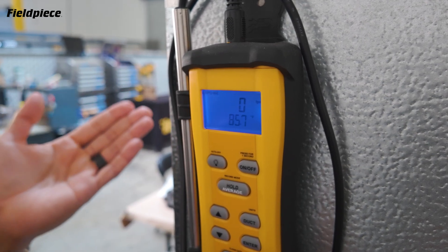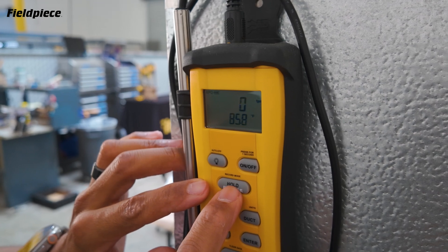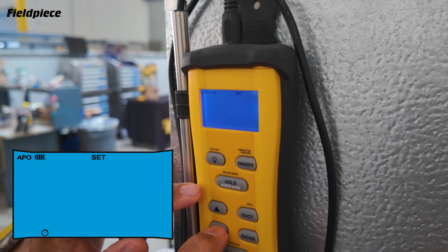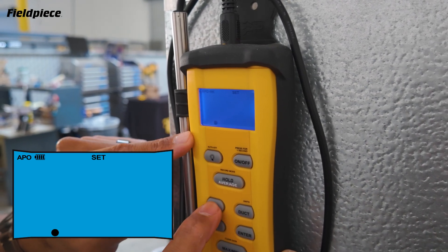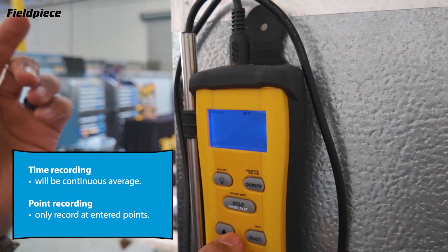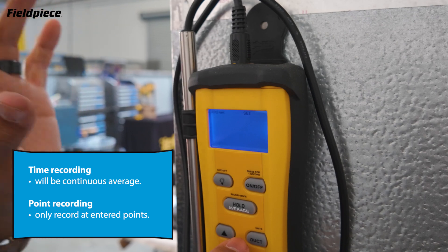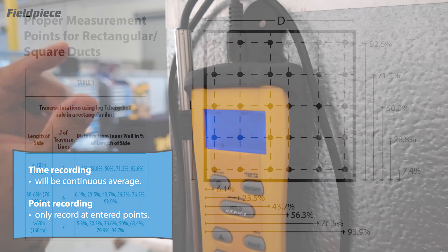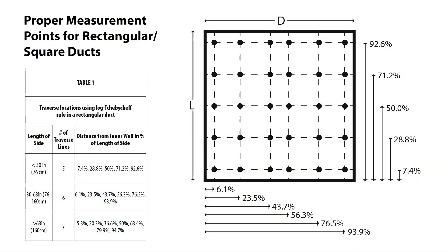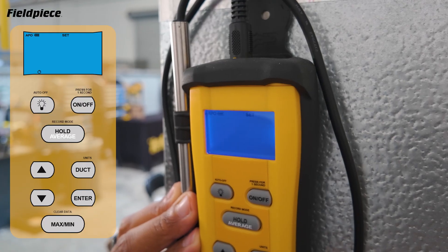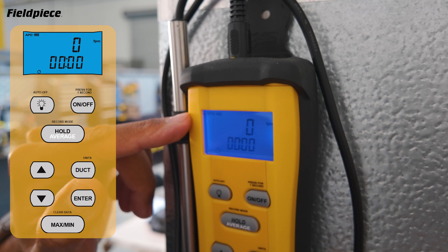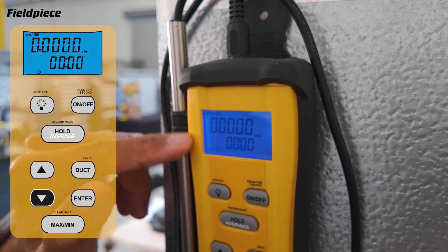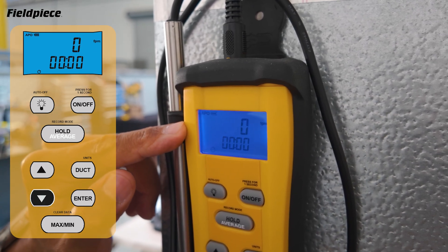Now our duct size is set and we're ready to start a timed average of the CFM. We press the hold average button for a second to get into record mode. From here we can choose between a timed recording or a point recording by pressing the arrow button. A timed recording takes the average of the airspeed for the total time the sensor was in the duct. A point recording takes the average of several individual points taken inside the duct. For this test we're going to use a timed measurement. Press enter and we see feet per minute on top and the timer ready to start.